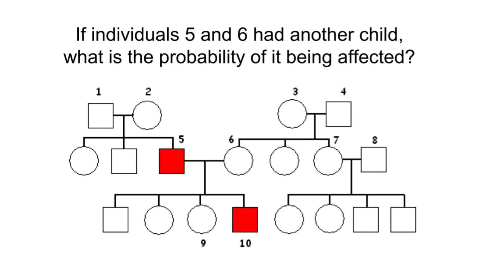Now let's assume that this is an autosomal dominant genetic disorder, and this male has the dominant allele. Such genetic disorders don't skip generations, and this person would have to get the dominant allele from one of his parents. We see that none of his parents are affected. So this is not an autosomal dominant genetic disorder, but rather an autosomal recessive genetic disorder.